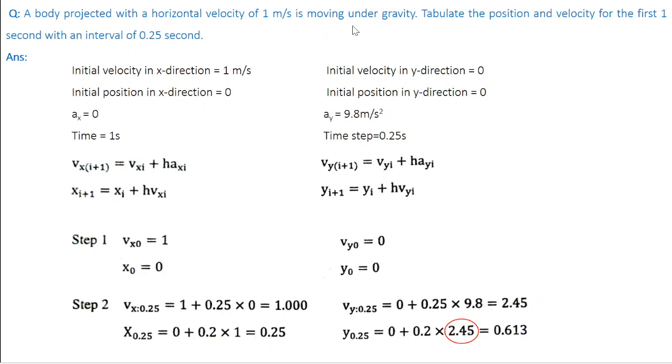And the body is moving only under the influence of gravity. So the force acting on it is the vertical force, the gravitational force. If I take the vertical direction as y direction, the corresponding acceleration is the acceleration due to gravity. So a_y equal to 9.8 meter per second square. This is the only acceleration the body is having. So a_x equal to 0. There is no acceleration in the x direction because there is no force acting in that particular direction. And the time window is 1 second. We are asked to take a step size of 0.25 seconds.